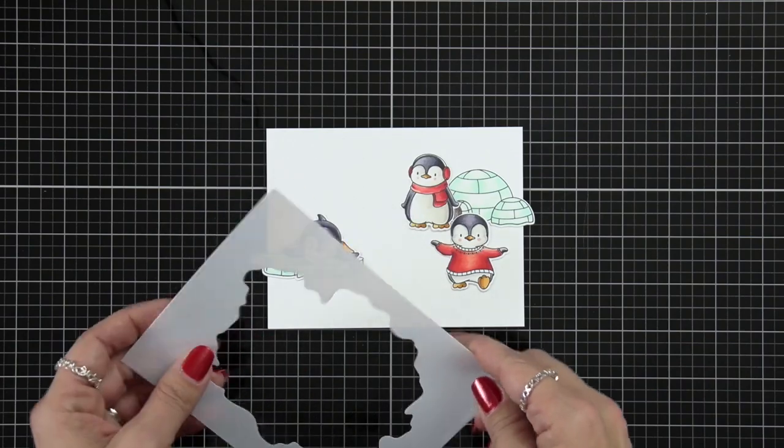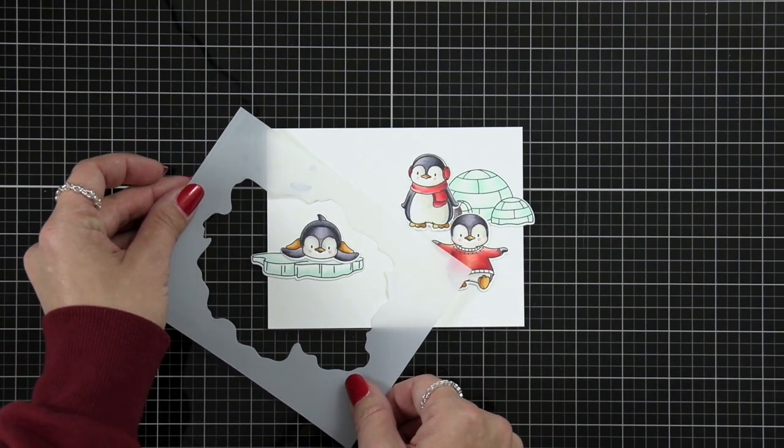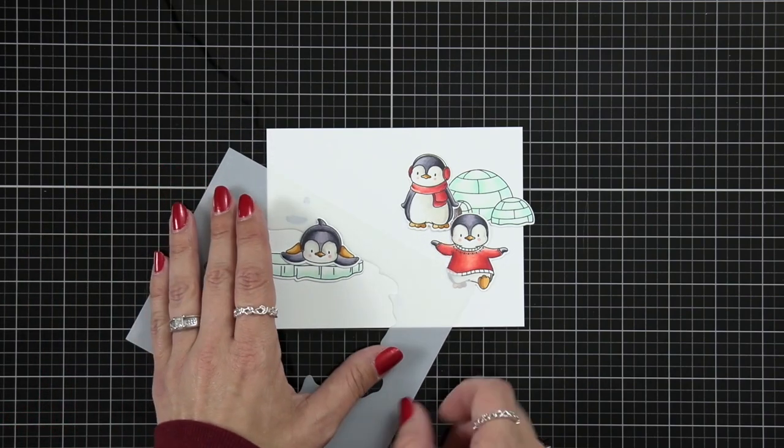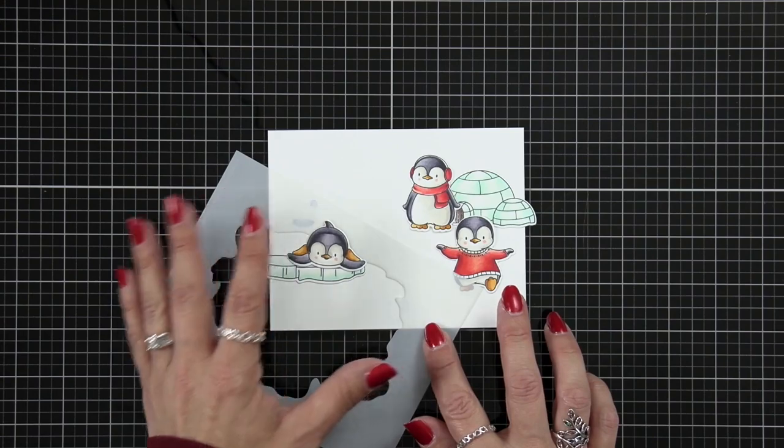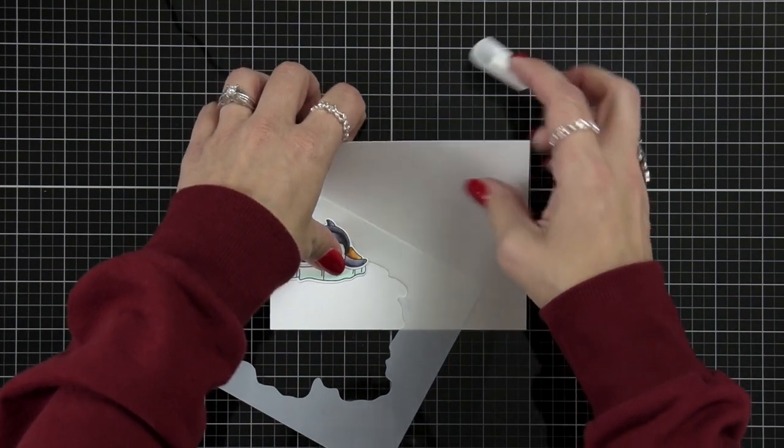I wanted to have a scene where I had some water on one side and then I had land on the other side so that each penguin kind of fit into the scene and I decided to use the watercolor wash free form stencil. That is going to look perfect for my little body of water.